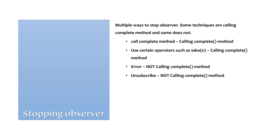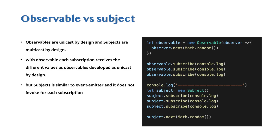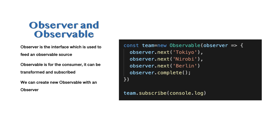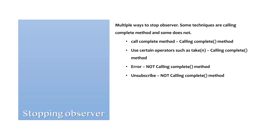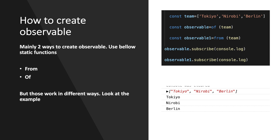There are multiple ways to stop the observer. On a conveyor belt you just press a switch, but in RxJS there are multiple ways. Some techniques call the complete() method — some do, some don't. For example, calling complete() directly completes it. Using the take operator will also call the complete method. But if you throw an error or call unsubscribe, it will not call the complete method.